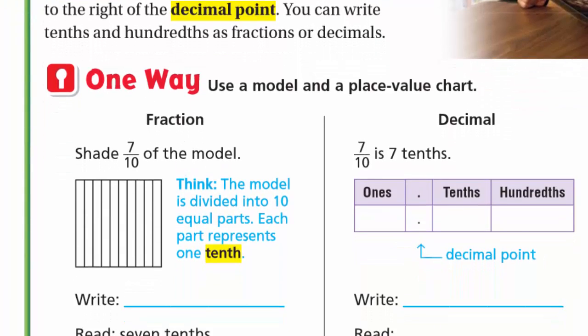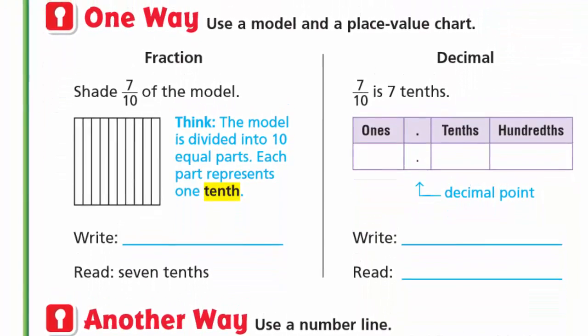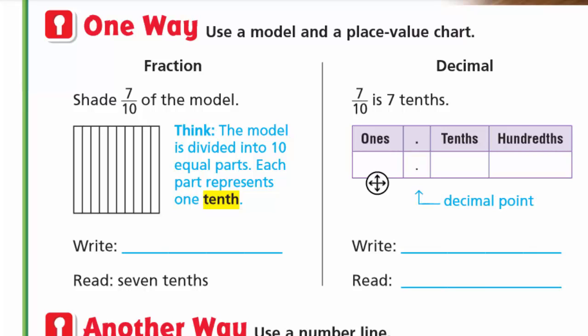We have two ways. One way is using a model and place value chart. First we need to shade 7 tenths of the model. The model is divided into 10 equal parts; each part represents one tenth. To shade 7 tenths we shade 7 parts, which are 7 tenths. So we write it as 7 over 10 and read it as 7 tenths.